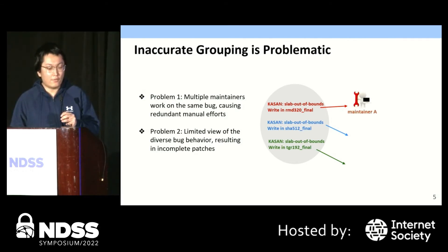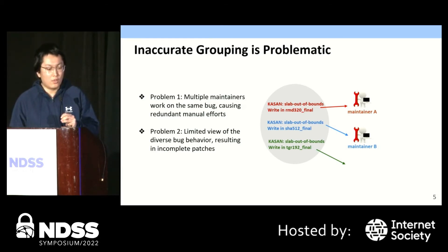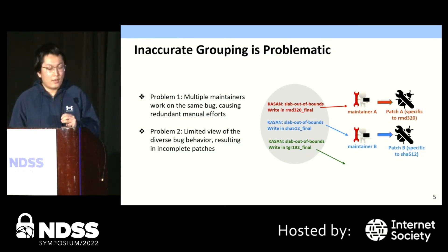Maintainer A takes care of the out-of-bounds write in the RMD function, and Maintainer B is responsible for the out-of-bounds write in the SSJ function. Since multiple maintainers work on the same bug, it causes redundant manual efforts. As a result, other bugs may lack enough manpower to analyze. To make things worse, every maintainer has a limited view of the bug behavior. Therefore, the patch developed by an individual maintainer may be very specific to the reported bug title. When the crash in the TGR function is not fixed, it results in an incomplete patch, which implies security risks.